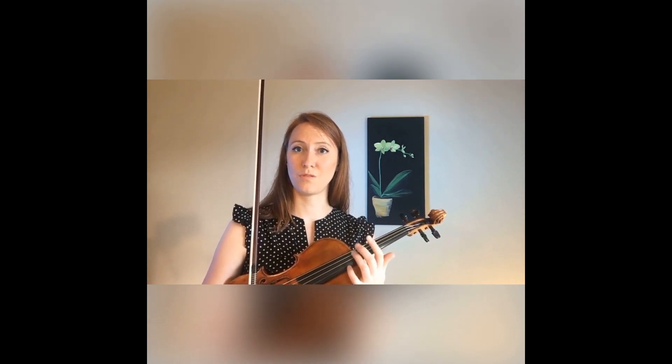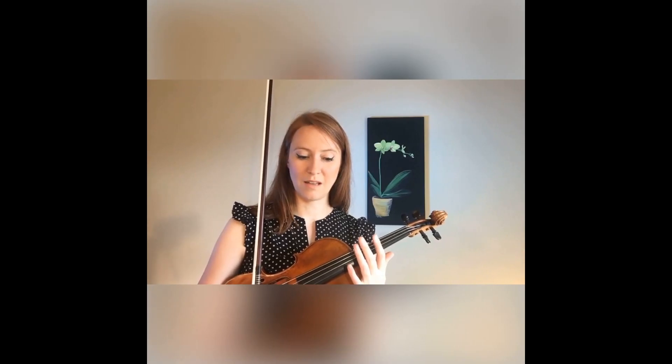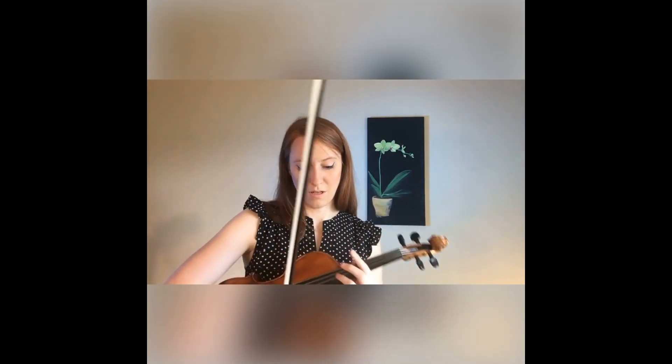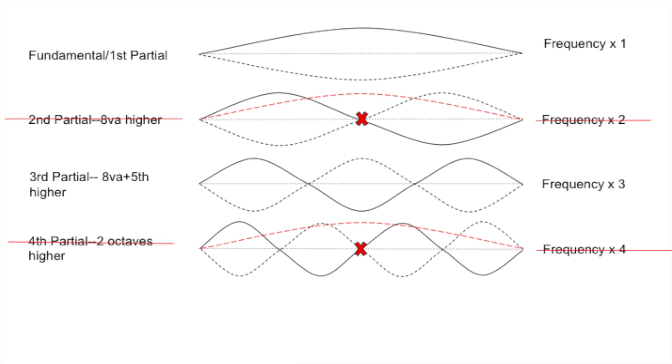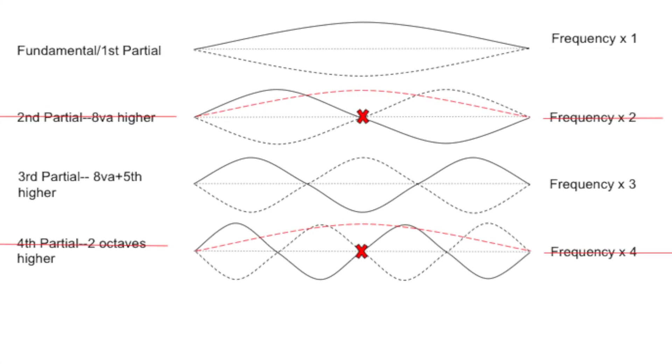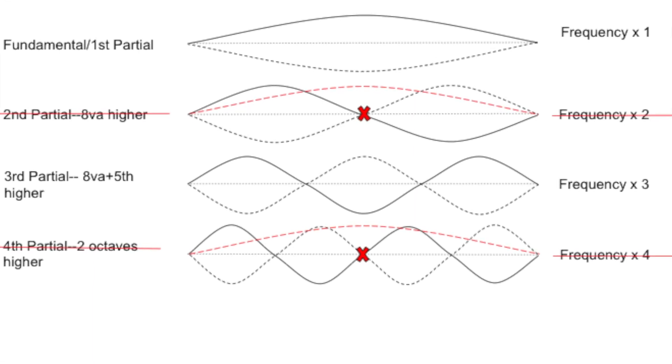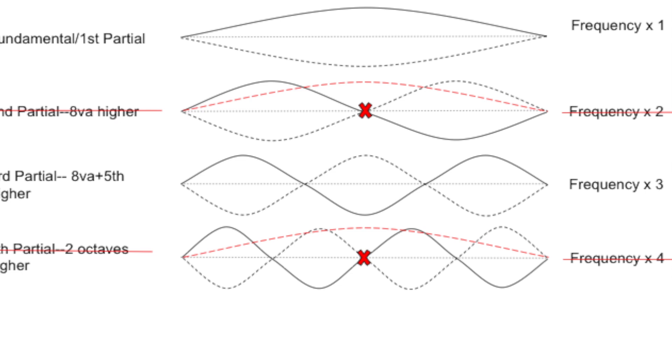As you are working with this, notice something: what happens if instead of creating a node with your finger, we pluck where the node should be? Well, in that case, the node is moving a lot, and so it can't be a node anymore. That means that whole partial, or that whole overtone, disappears from the sound. So if I pluck at half the string length, you're not going to hear the second, fourth, sixth, or eighth overtone, because all of them have a node at that spot, and I've caused that mode to move.